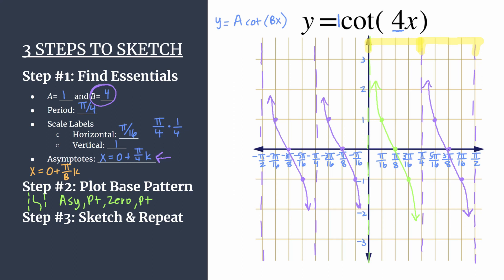So hopefully this helped you feel really confident in using this method, three steps to sketch, to graph an unshifted cotangent graph. I'll post links in the video description if you want to check out more examples of graphing cotangent, and I'll also have links for graphing any of the other trig functions as well. Thanks for watching.